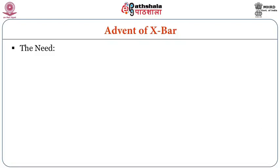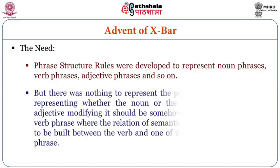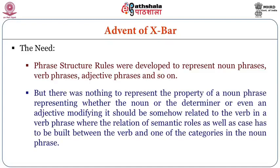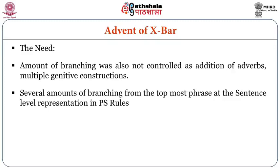What is the need? The phrase structure rules were developed to represent noun phrases, verb phrases, adjective phrases and so on, but there was nothing to represent the property of a noun phrase — whether the noun, the determiner, or even an adjective modifying it should be somehow related to the verb in a verb phrase, where the relation of semantic roles as well as case has to be built between the verb and one of the categories in the noun phrase. The amount of branching was also not controlled, as addition of adverbs and multiple genitive constructions led to several levels of branching from the topmost phrase in PS rules.